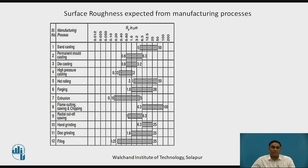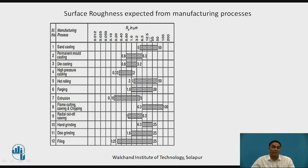Now that we understand surface roughness symbols and how they are indicated, we look at which manufacturing method achieves what roughness value. This is indicated with one of the standardized values in the table. The first column is the serial number, the second column is the manufacturing process, and the third column indicates the range of roughness value — starting from 0.012 to 200 µm — that is the RA value.